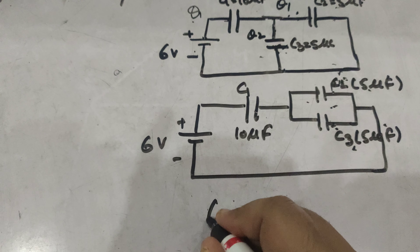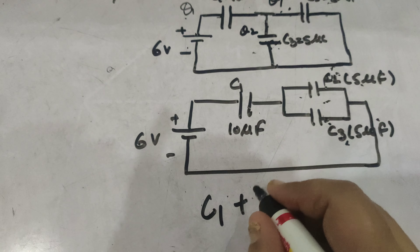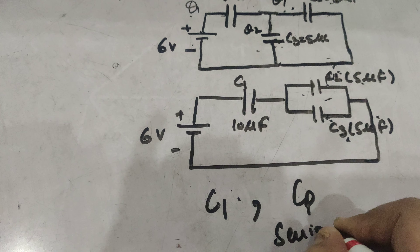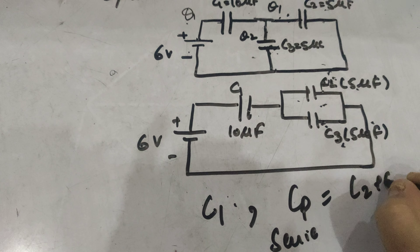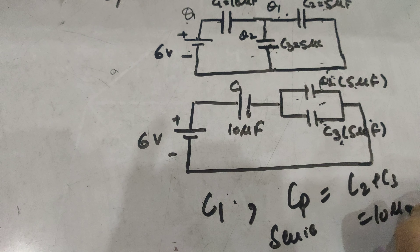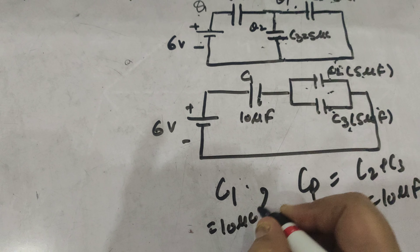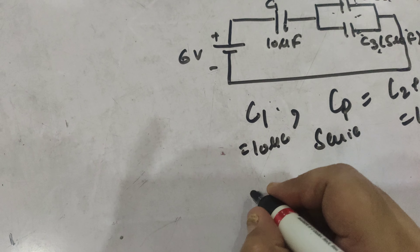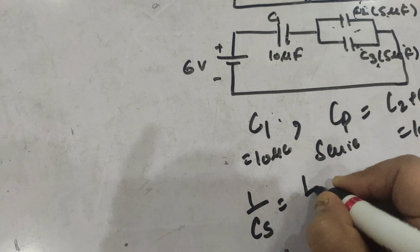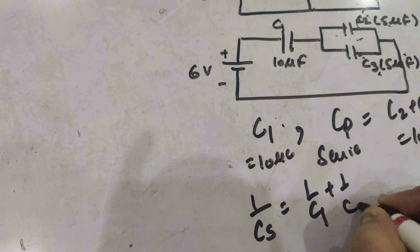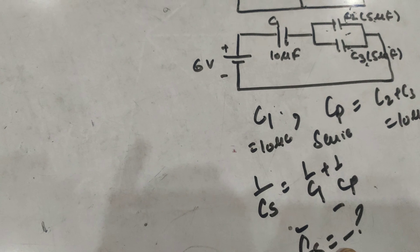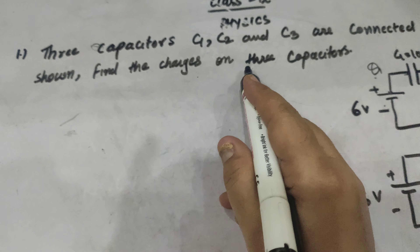So Cp equals C2 plus C3 equals 10 microfarads, and C1 is also 10 microfarads. Now C1 and Cp are in series. To find the net capacitance, we write: 1 over Cs equals 1 over C1 plus 1 over Cp. By putting in the values, we can calculate Cs. Now we have to find out the charges on the three capacitors.